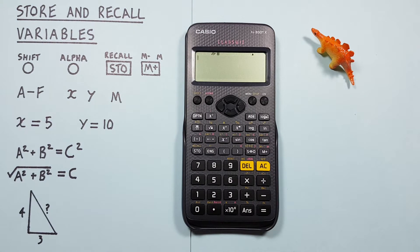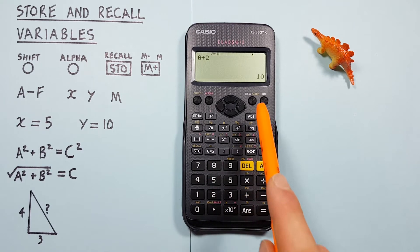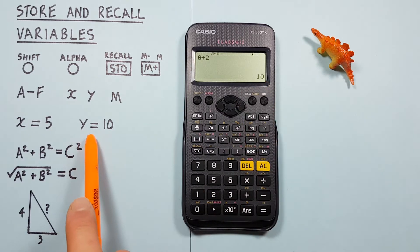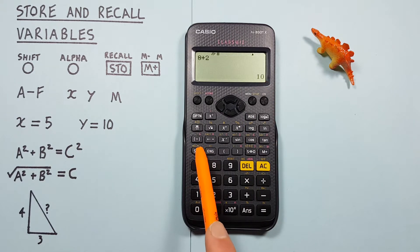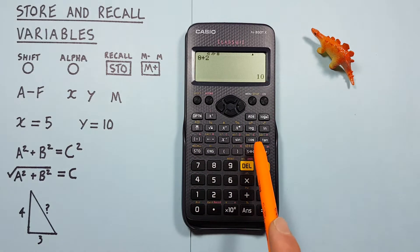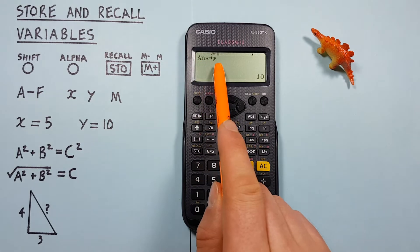We can also store the result of calculations. For example if we do 8 plus 2 equals 10 and want to store that as Y, again we just press the store key and then select the Y memory slot.